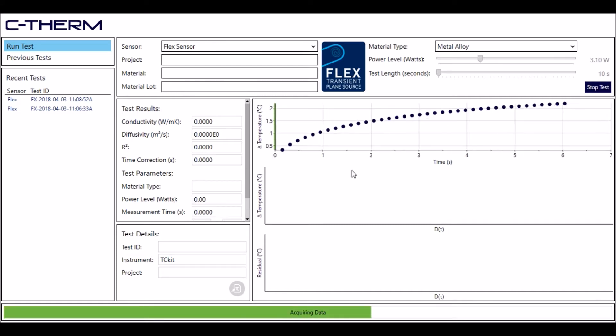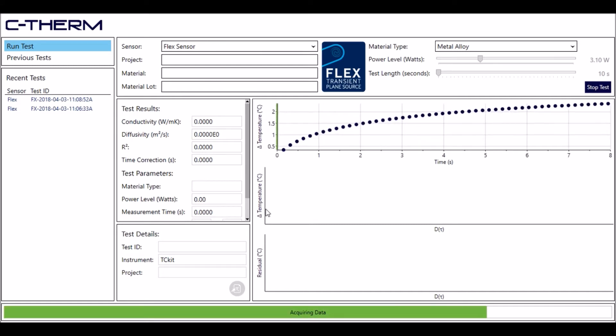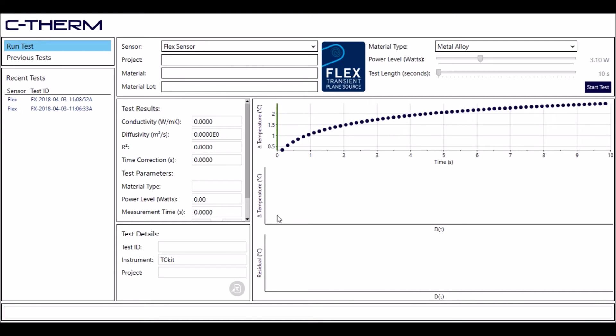Now as you see, you're getting a trending value which is going to be approximately 14.6 watts per meter Kelvin, as the stainless steel reference material has that value well characterized.